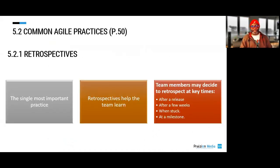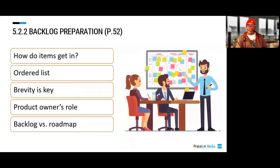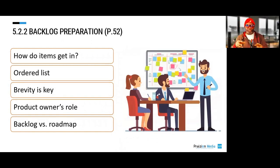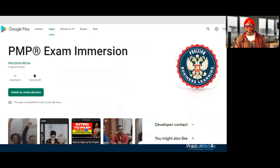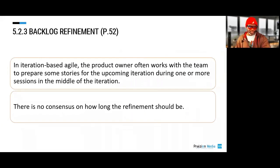The rest of this chapter talks about events in Agile. Retrospectives are the single most important practice as documented by PMI on page 50. We also talk about backlog preparation — how do items get into the backlog? There's got to be some interface between stakeholders and the product owner, and it ultimately gets put into a backlog, and a roadmap will be crafted. Then we talk about backlog refinement: we need to refine our backlog, which is a list of all the things the customer wants.